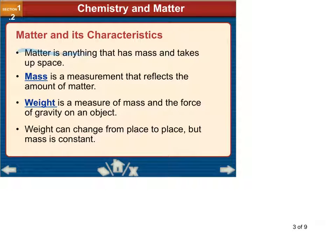Matter, as we've had before, is anything that has mass and takes up space. Mass is a measurement that reflects the amount of matter. Weight is a measure of mass and the force of gravity on an object. Weight can change from place to place, but mass is constant.